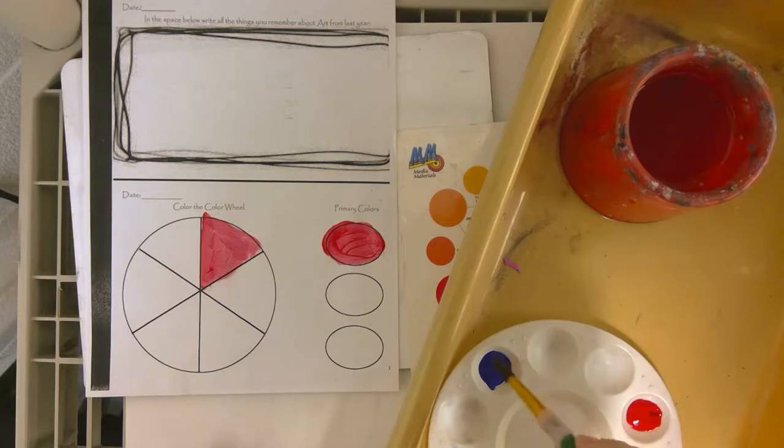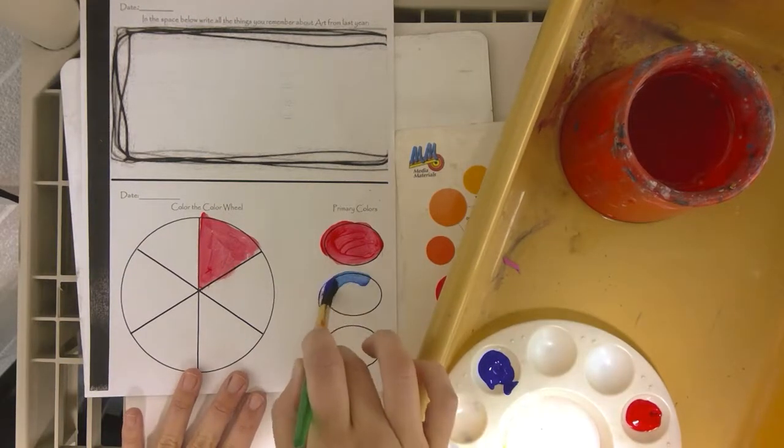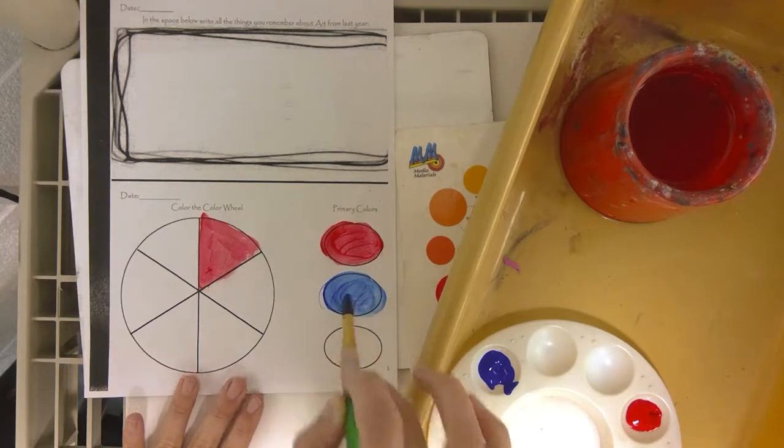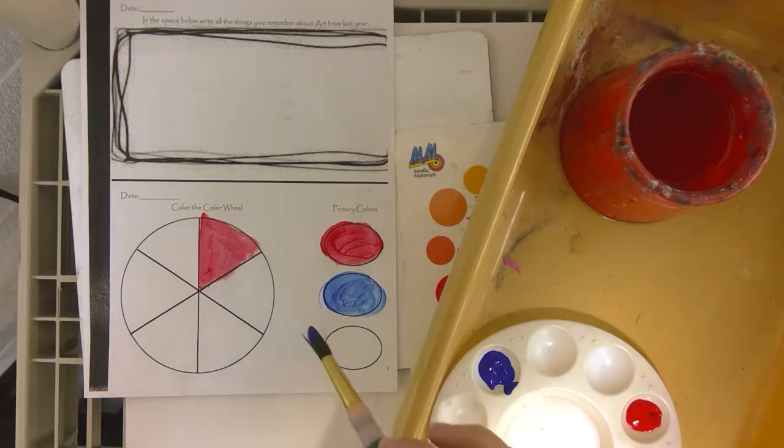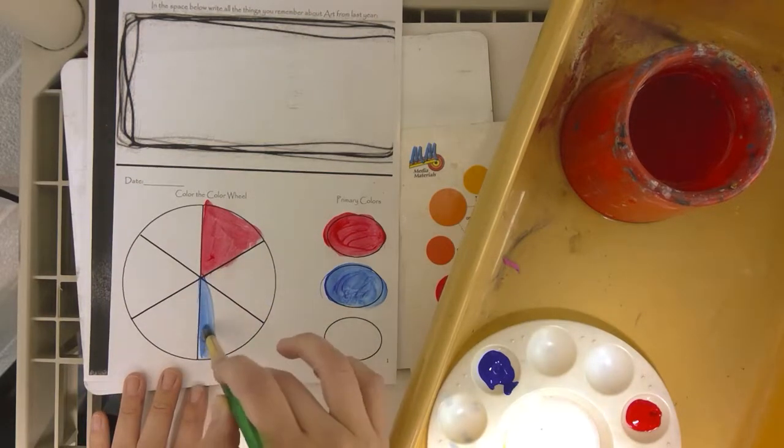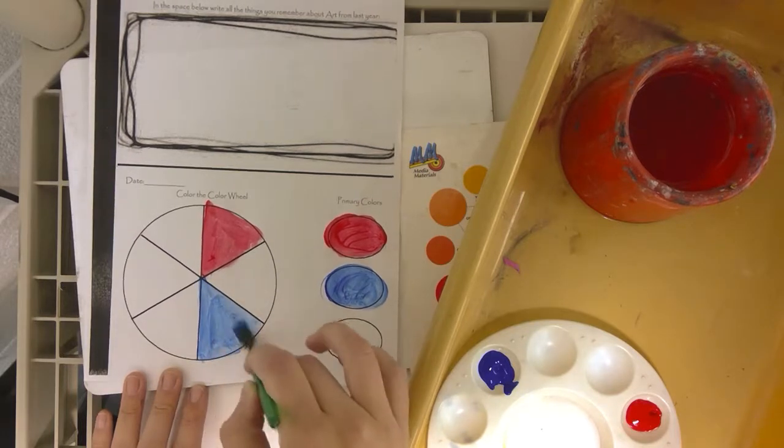Then we're going to go to blue and then we're going to skip one and paint another piece of the pie.